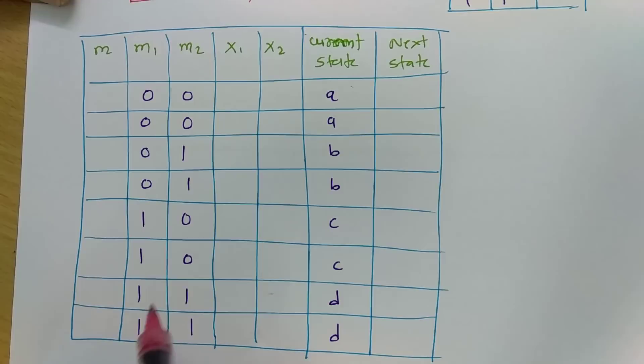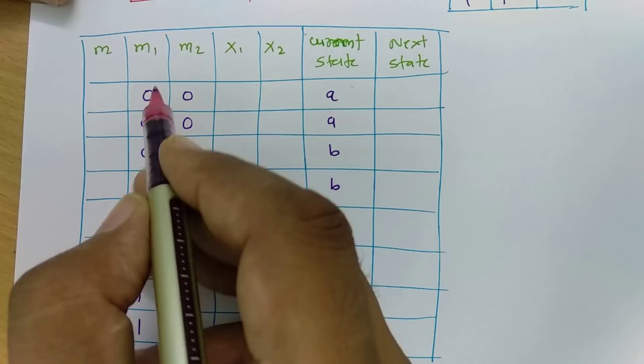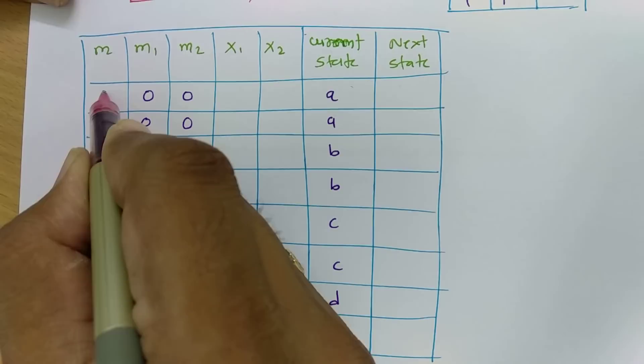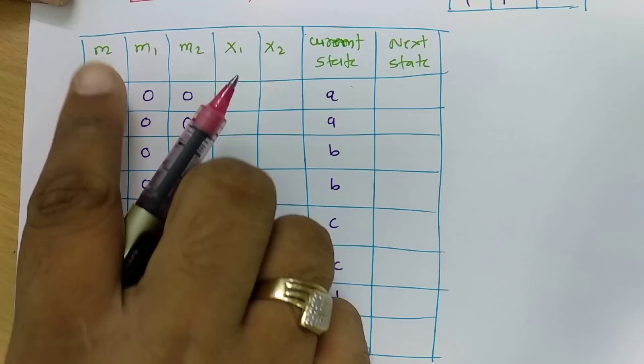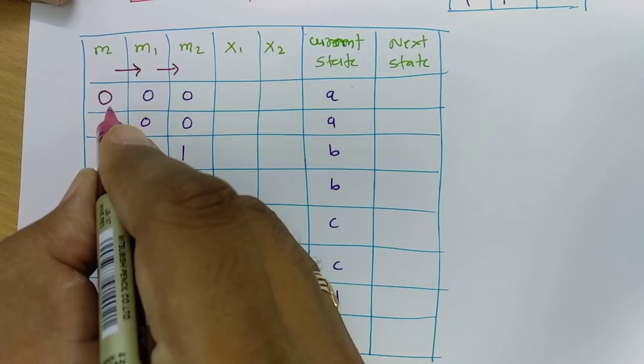I have made this table to check: if the convolution encoder is in state A and the current message bit is 0, the next state will be m and m1. The reason is when you insert the next bit, this bit will get shifted in this direction. So the next state will be 00, which means state A.